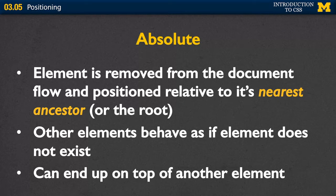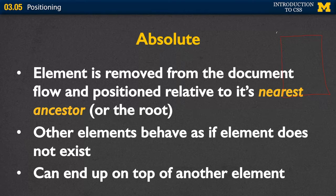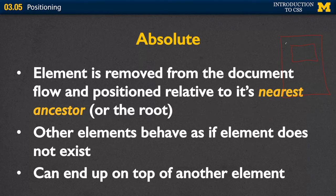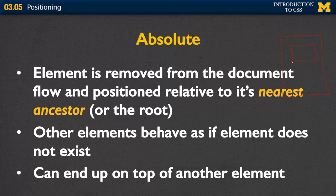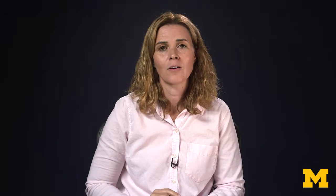With absolute positioning, the other elements on the page behave as if the absolutely positioned element doesn't even exist. What this can lead to is that you can end up with one element on top of another. I've got my browser — let's say I've got a div that's absolute, positioned 100 pixels down from the top and maybe 100 over. With relative, the next element would go underneath it. But if we have two absolute values, the next one is going to go right on top of it.